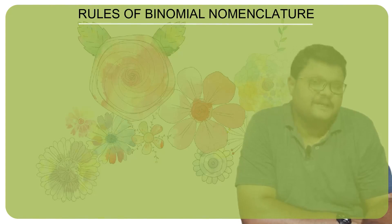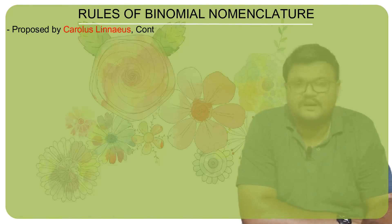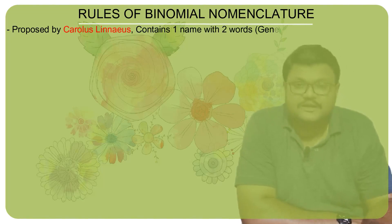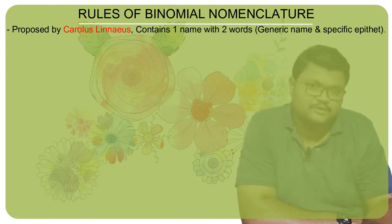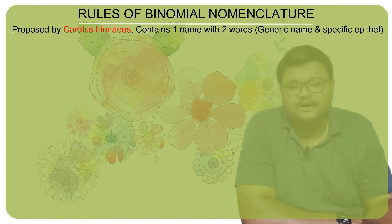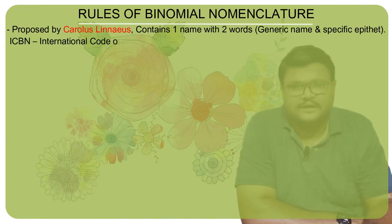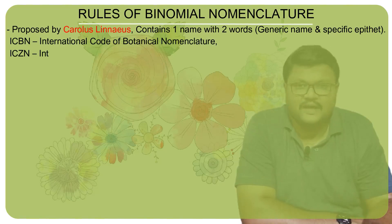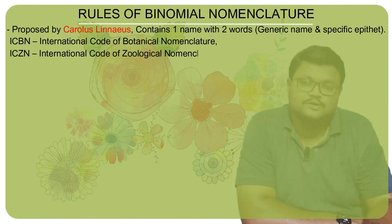Binomial nomenclature is the process or phenomenon of assigning a two-word name to an organism, proposed by Carolus Linnaeus. According to him, every organism should have one name with two words: the first word is the genus name or general name, and the second is the species name or specific epithet. Combining these gives a scientific name, authorized by internationally accepted committees such as ICBN — International Code for Botanical Nomenclature — and ICZN — International Code for Zoological Nomenclature.